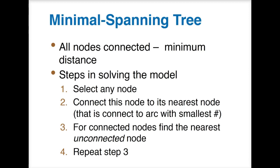Now we want to end with the minimal spanning tree. The situation we're looking at is a small housing development area that wants to connect water pipes to all the houses. They want to do this by laying the least amount of pipe possible. All they care about is that there is a connection to all houses, meaning all nodes in the network are connected somehow.